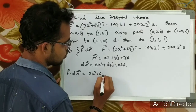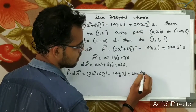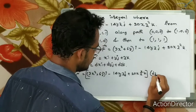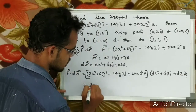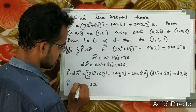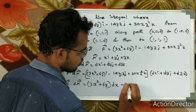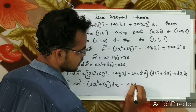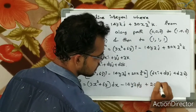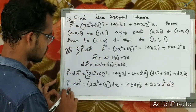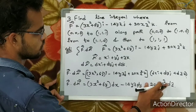So f vector dot dr vector equals (3x squared plus 6y) dx minus 14yz dy plus 20xz squared dz. This is the expression we will evaluate along each part of the path.